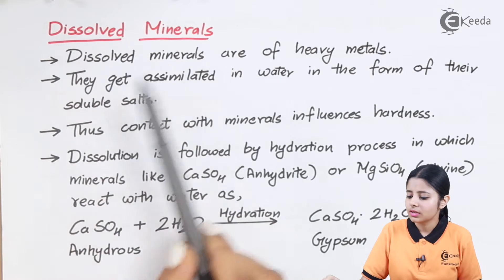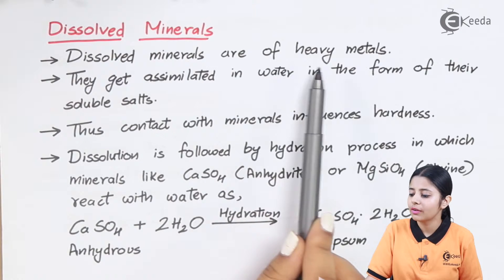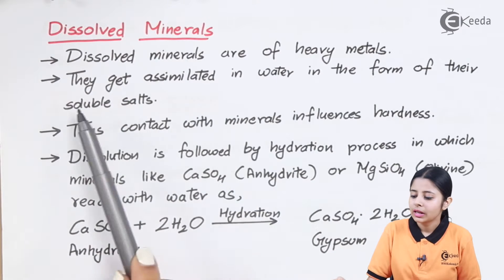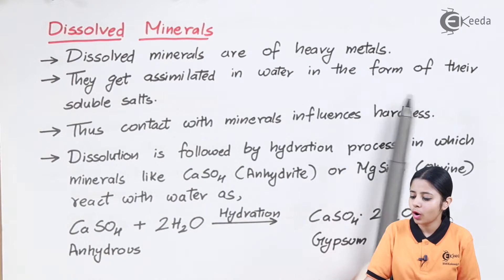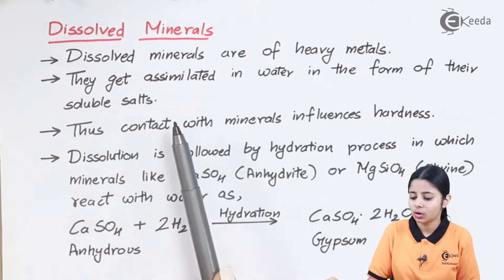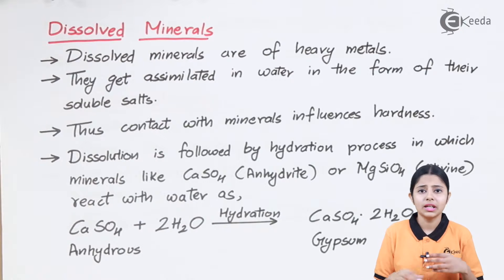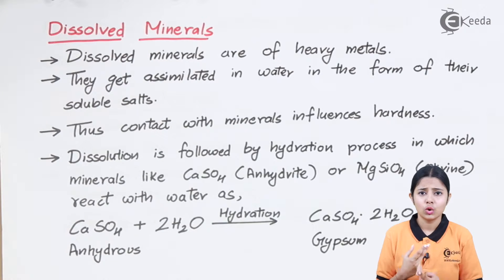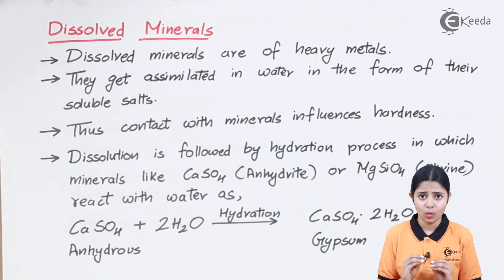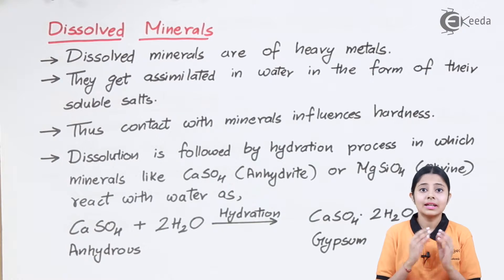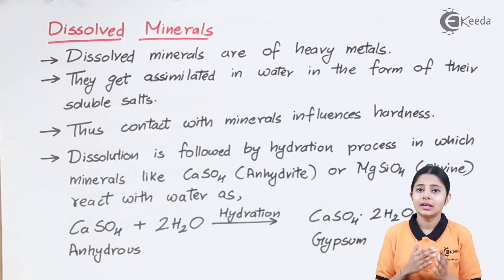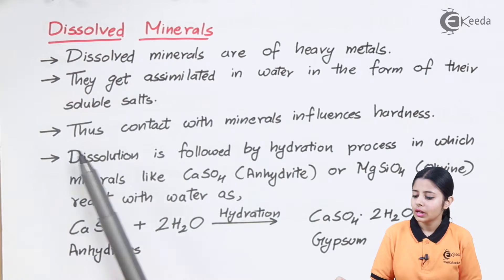Dissolved minerals are heavy metals that become assimilated in water in the form of soluble salts. There are many metals like lead and sodium present in water, but these metals are not soluble in water on their own — they become soluble once they form salts. Let us see how they form salts.